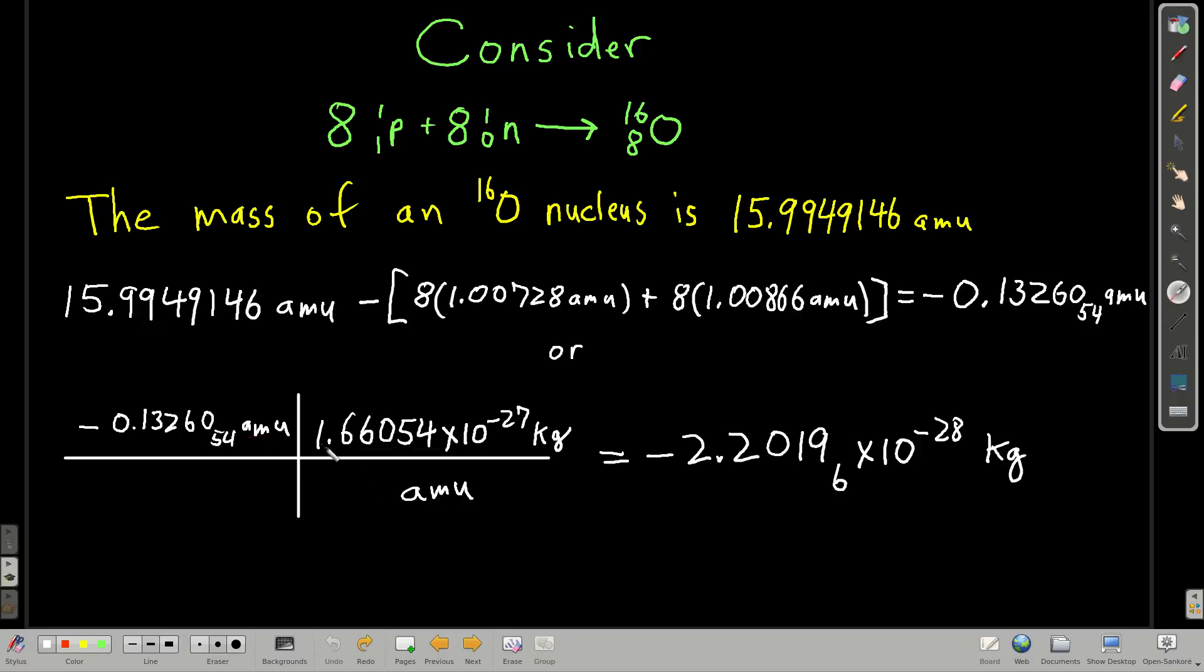We're going to convert it to kilograms. By the way, in this unit, this subject, this conversion factor here is a useful one to know, the conversion between kilograms and AMUs. So anyway, it doesn't look like much, right? Negative 2.202 times 10 to the minus 28th kilograms.